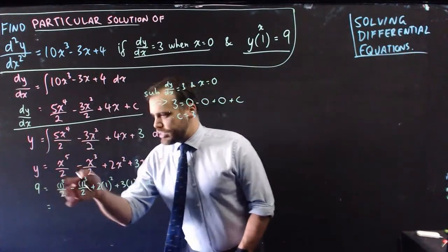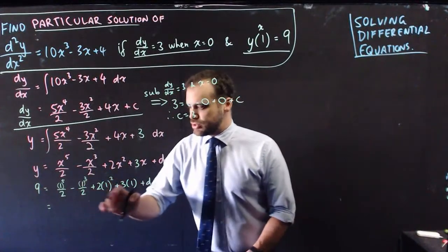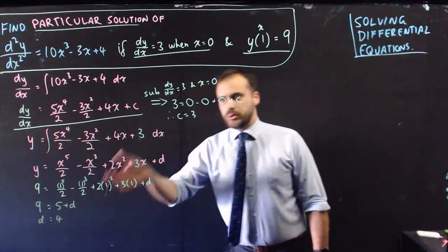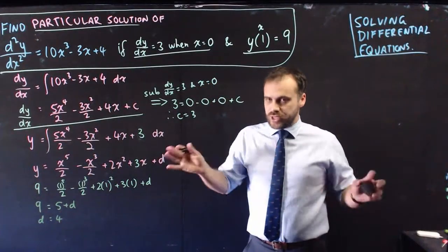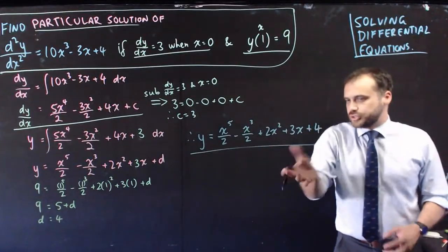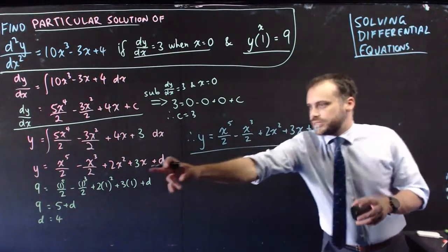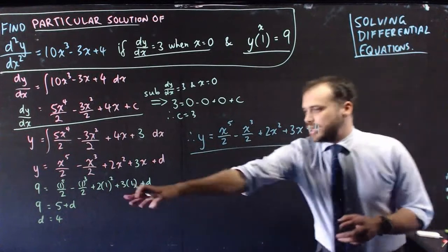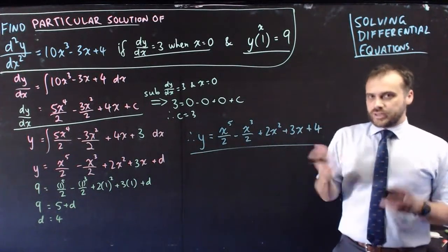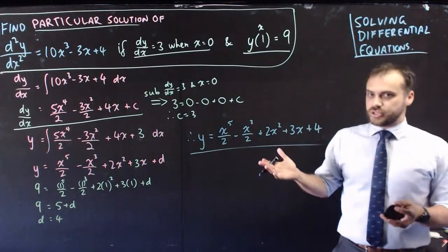So when we do that, we get 1/2 minus 1/2 plus 2 plus 3 plus d. And it's not hard to see that d equals 4. And we are finished, we now know our particular solution. So our particular solution is just y with our c value of 3 put in there, and our d value of 4 put in there. Okay, that's solving differential equations.